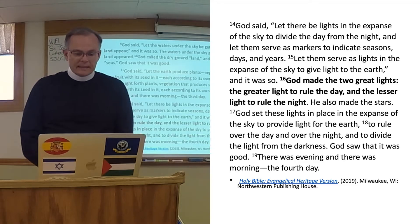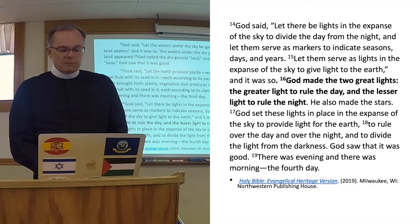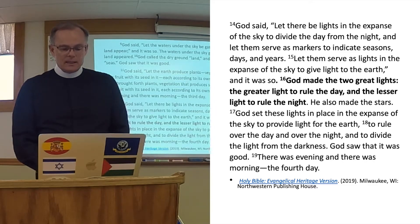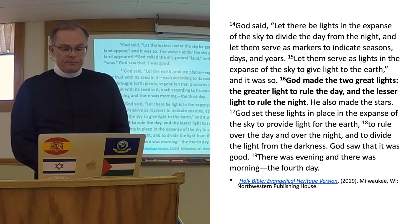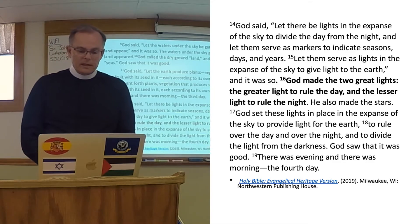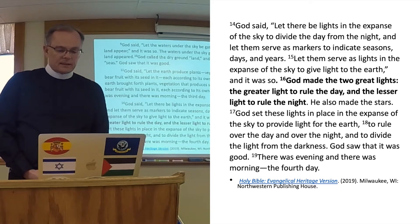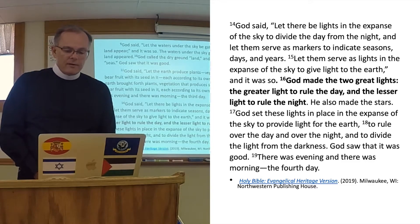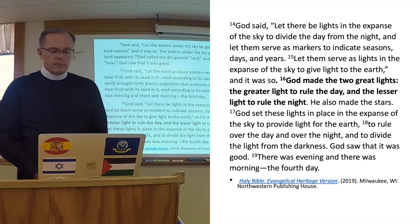God said, "Let there be lights in the expanse of the sky to divide the day from the night, and let them serve as markers to indicate seasons, days, and years. Let them serve as lights in the expanse of the sky to give light to the earth." And it was so. God made the two great lights — the greater light to rule the day, and the lesser light to rule the night. He also made the stars. God set the lights in place in the expanse of the sky to provide light for the earth, to rule over the day and over the night, and to divide the light from the darkness. God saw that it was good. There was evening, and there was morning — the fourth day.